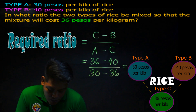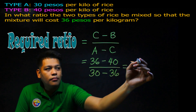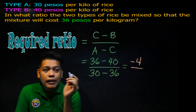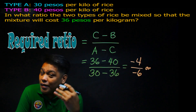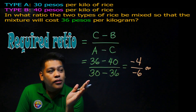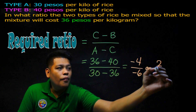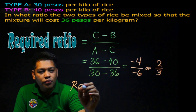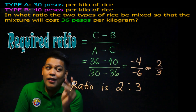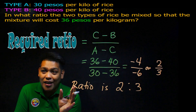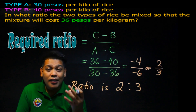So, let's compute: 36 minus 40 equals negative 4, and 30 minus 36 equals negative 6. Negative divided by negative becomes positive, so we get 4 over 6. Getting the lowest term, that becomes 2 over 3. Meaning the ratio is 2 is to 3 — you take 2 kilos from Type A and 3 kilos from Type B, giving you 5 kilos of Type C.